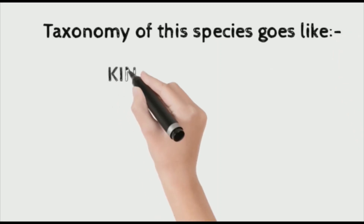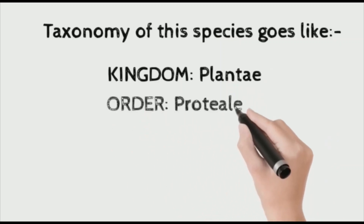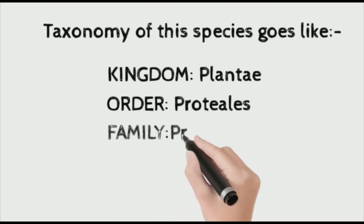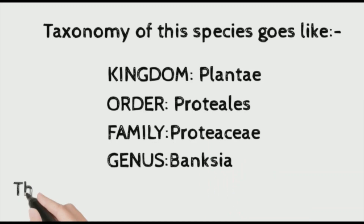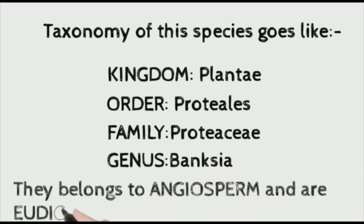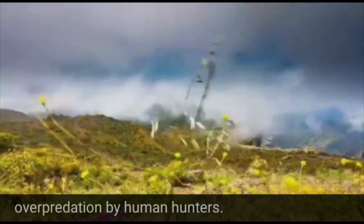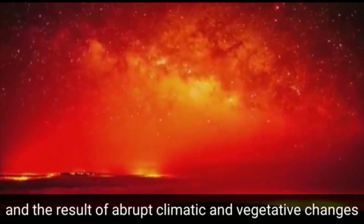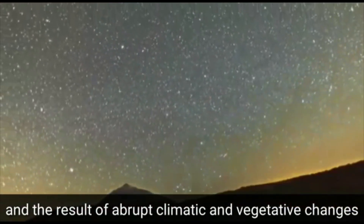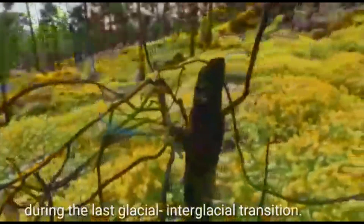The taxonomy of Banksia kinjiensis is: kingdom Plantae, order Proteales, family Proteaceae, genus Banksia. They belong to the angiosperms and are eudicots. This species of Banksia went extinct as a result of over-predation by human hunters and the abrupt climatic and vegetative changes during the last glacial-interglacial transition.